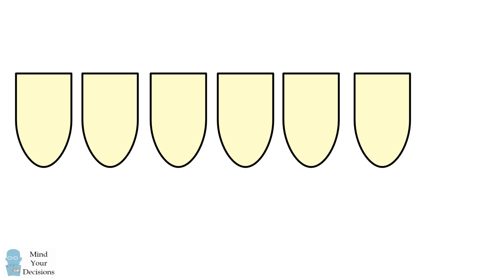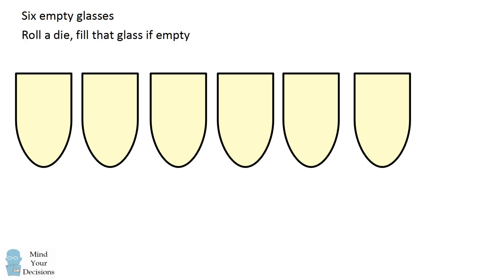Hi, this is Presh Talwalkar. We start this game with 6 empty glasses placed in a row. You can number the glasses from 1 to 6 starting from the left. We roll a standard die, and whatever number we roll, we're going to fill that glass with liquid.